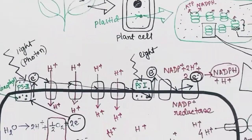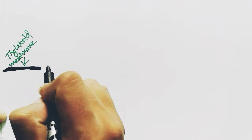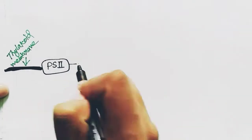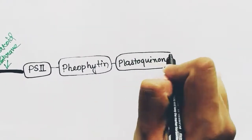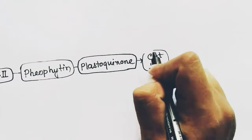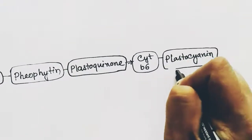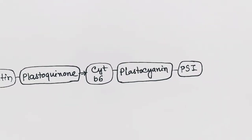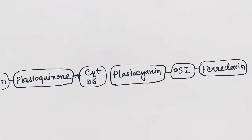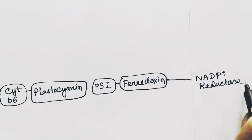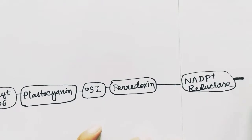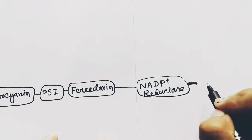So we are back to the thylakoid lumen and thylakoid membrane again to know the names of the proteins. This is the thylakoid membrane. The first transmembrane protein is PS2 or Photosystem 2. Next: pheophytin, plastoquinone, cytochrome b6, plastocyanin, and PS1 or Photosystem 1, then ferredoxin, and NADPH reductase. And one more protein — ATP synthase.